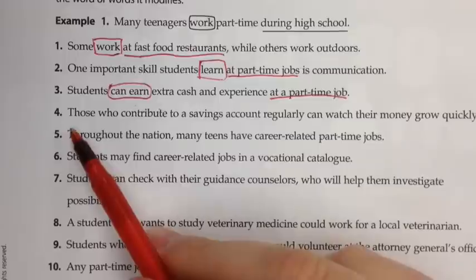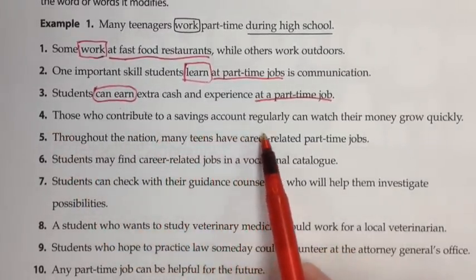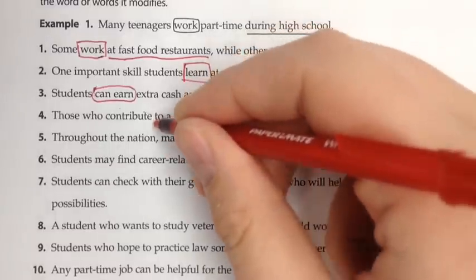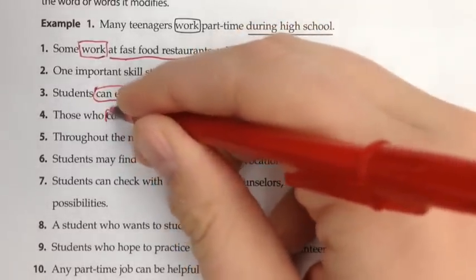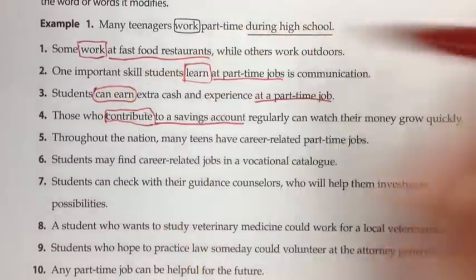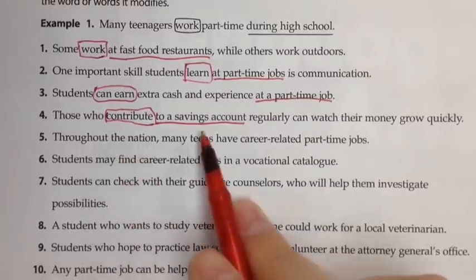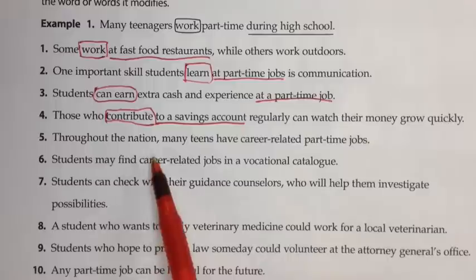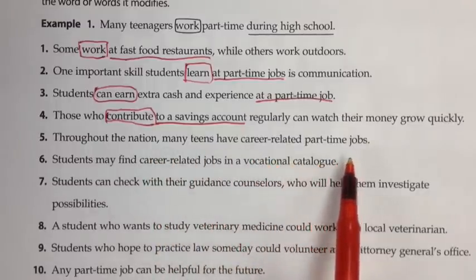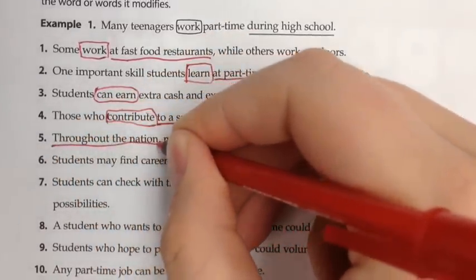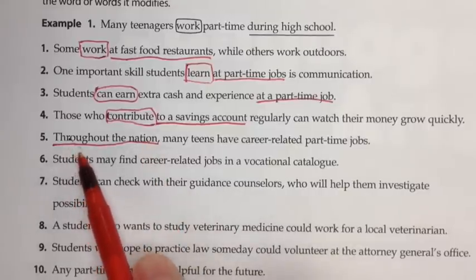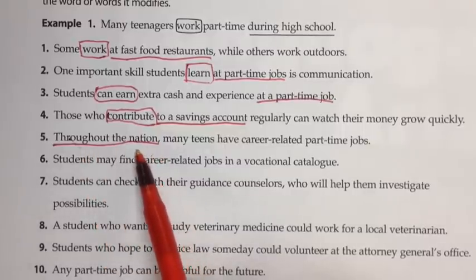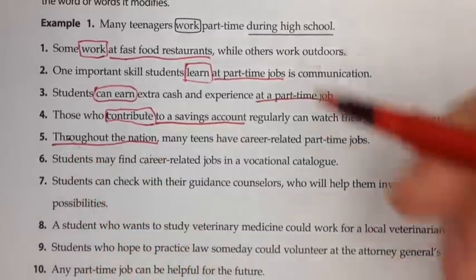Number four: those who contribute to a savings account regularly can watch their money grow quickly. 'To' is a preposition, and 'a savings account' is the object. This prepositional phrase describes the word 'contribute,' telling us where they contribute. Number five: throughout the nation, many teams have career-related part-time jobs. 'Throughout' is a preposition, and 'the nation' is the object. Adjective phrases actually can't start sentences — if you see a prepositional phrase at the beginning of a sentence, it's always going to be an adverb phrase, telling us where or to what extent.